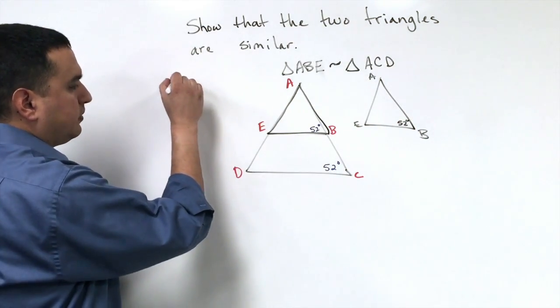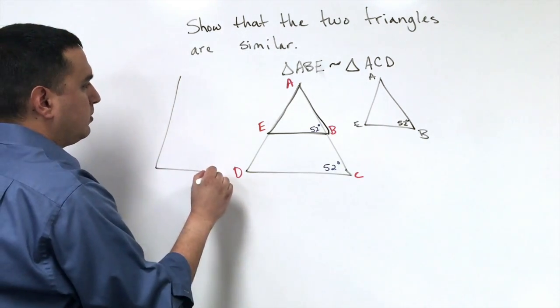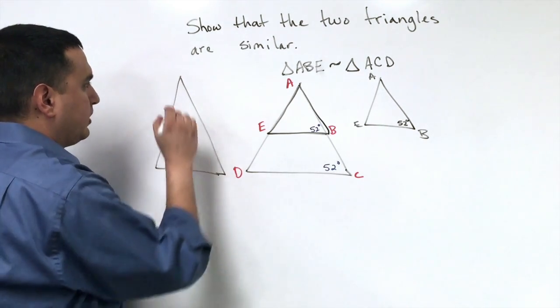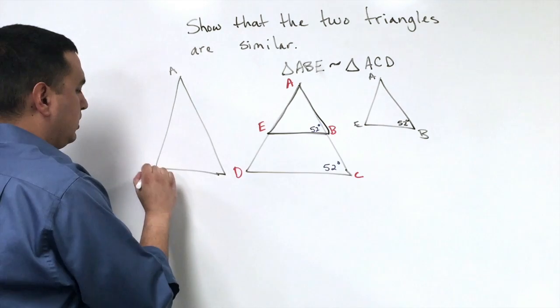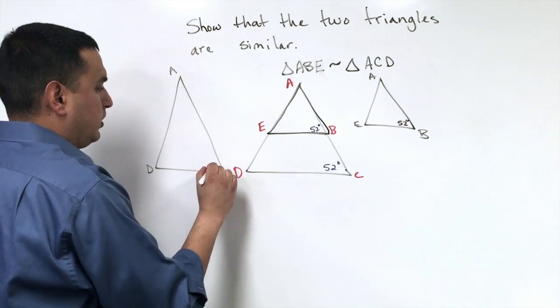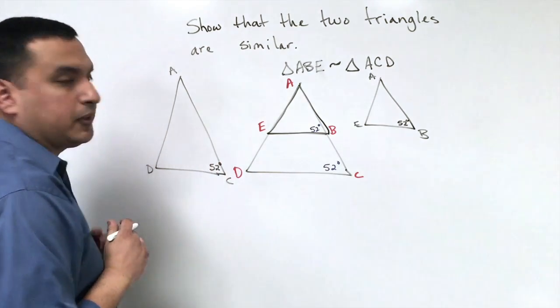And then you'd also have, if I drew the bigger triangle, something like it, just kind of as a reference, this would be A, D, C, and you know this is 52 degrees.